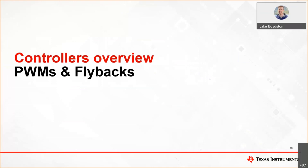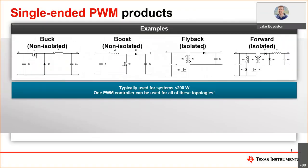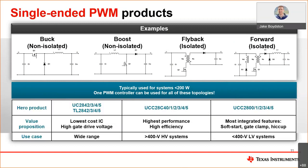Now on to the product showcases. To keep our order the same, I'll start with the controller hero products you may be interested in. Here are a few examples of topologies used for systems requiring less than 200 watts. If you work on projects utilizing multiple of these topologies, hopefully you are aware that one PWM controller could be configured for any of these four topologies and even more. Our top selling products are these three families here, and you'll notice the Unitrode naming convention on the UC2842, for example.